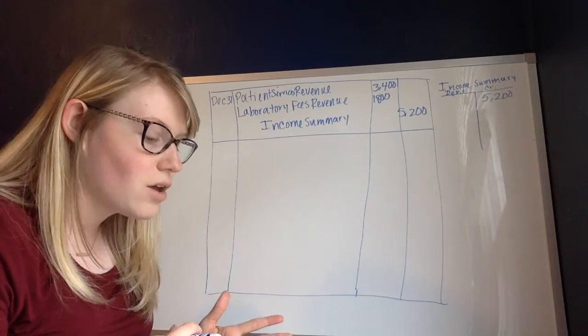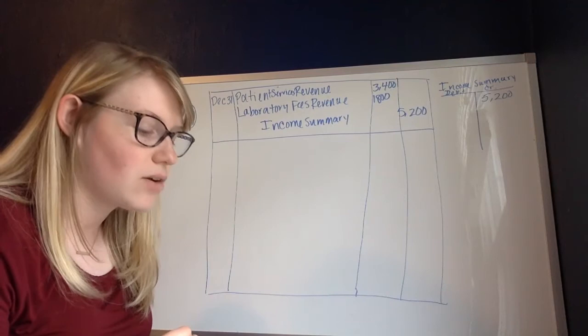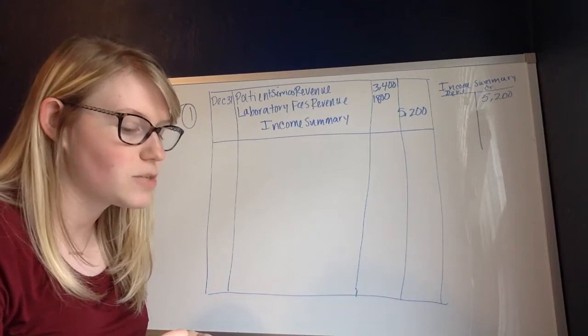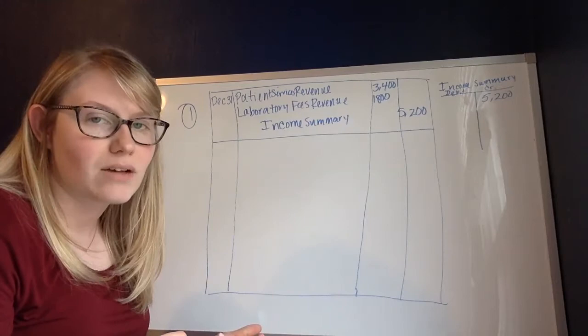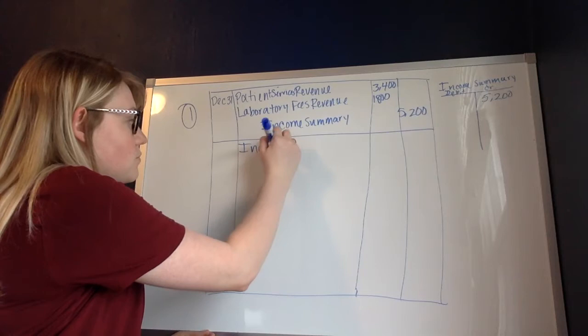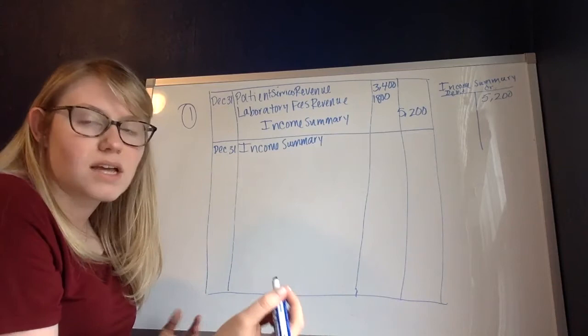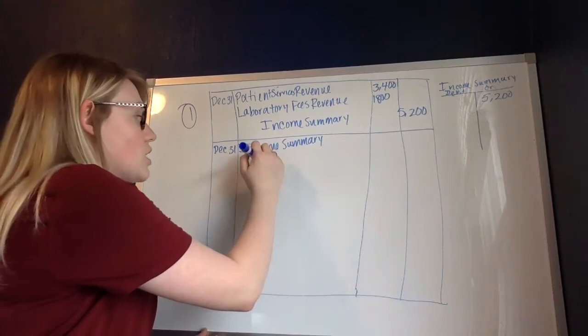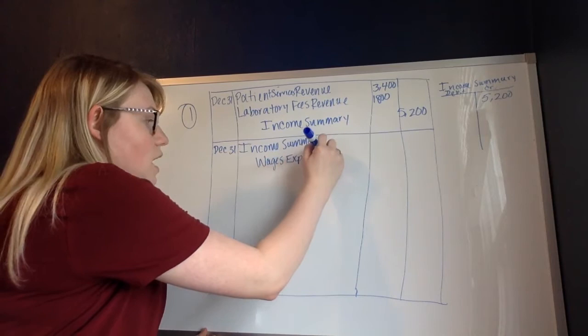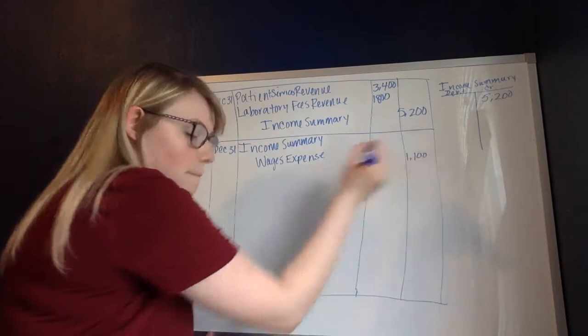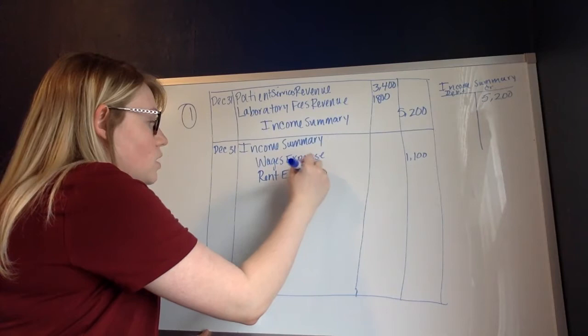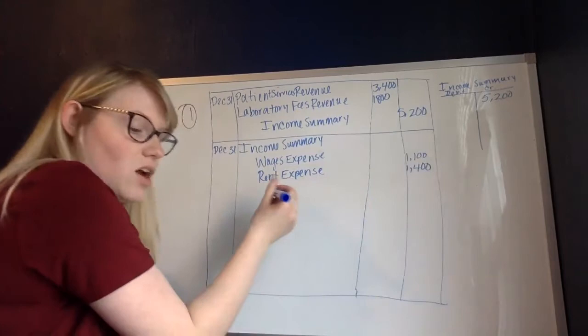Next we need to close the expense accounts. The problem says assume that debit balances at the end of the accounting period are $1,400 in rent expense, $1,100 in wages expense, and $500 in other expenses. To close my expense accounts I have to credit them, so I'm going to debit my income summary. The accounting period is still ending December 31st, so that's the date. I'll list the credits: wages expense $1,100, rent expense $1,400, and other expenses $500.